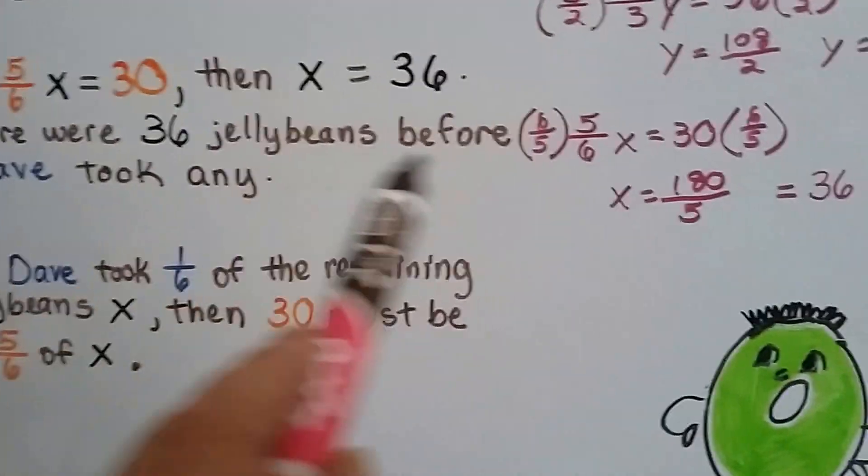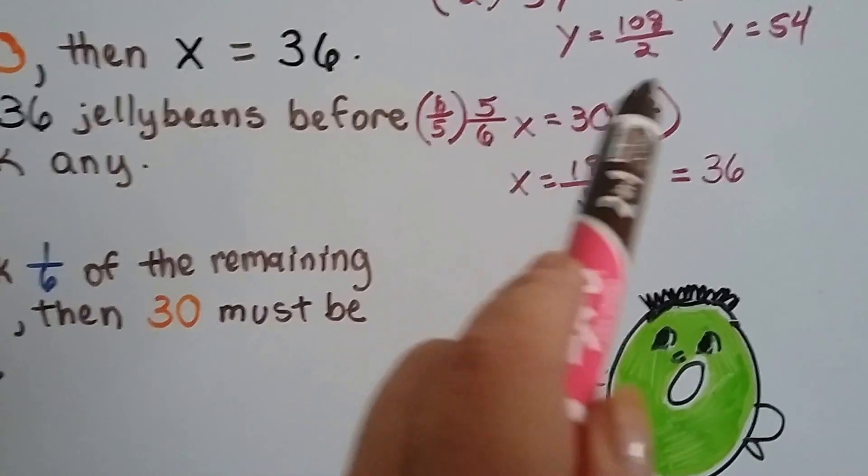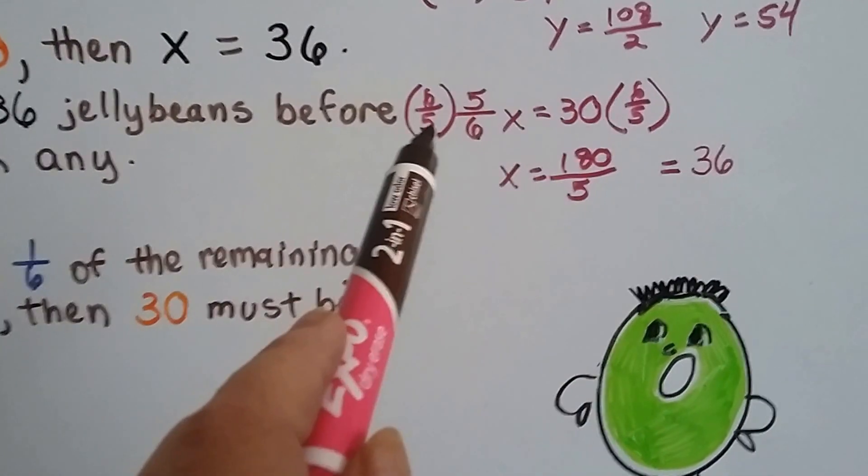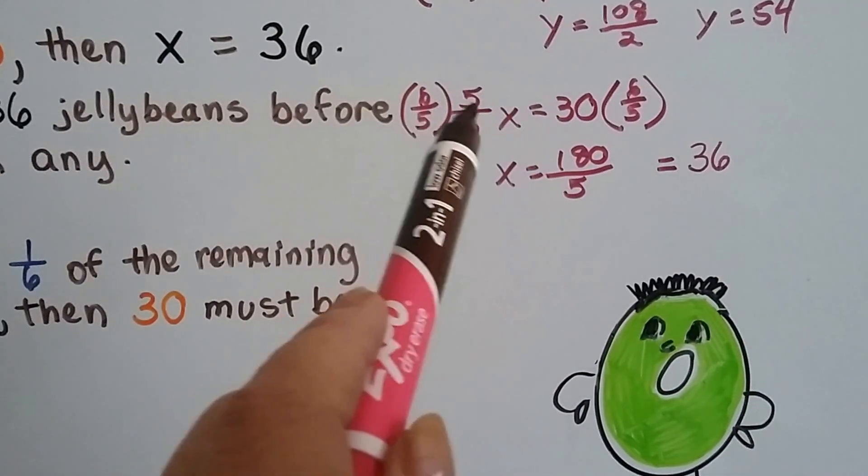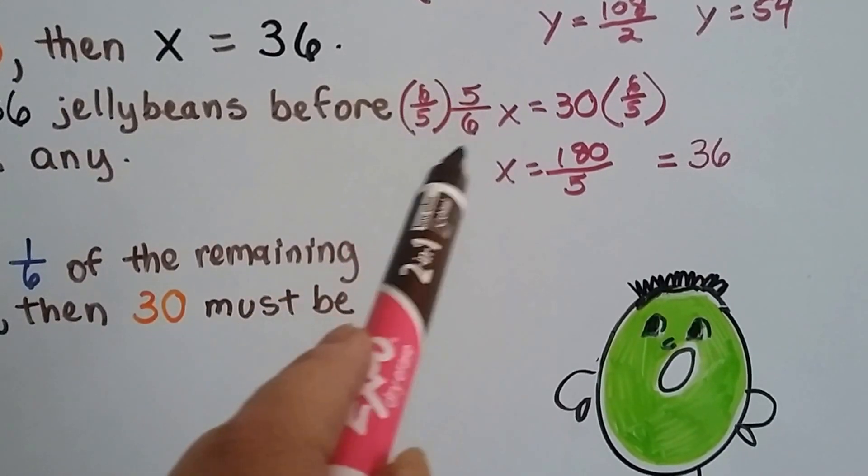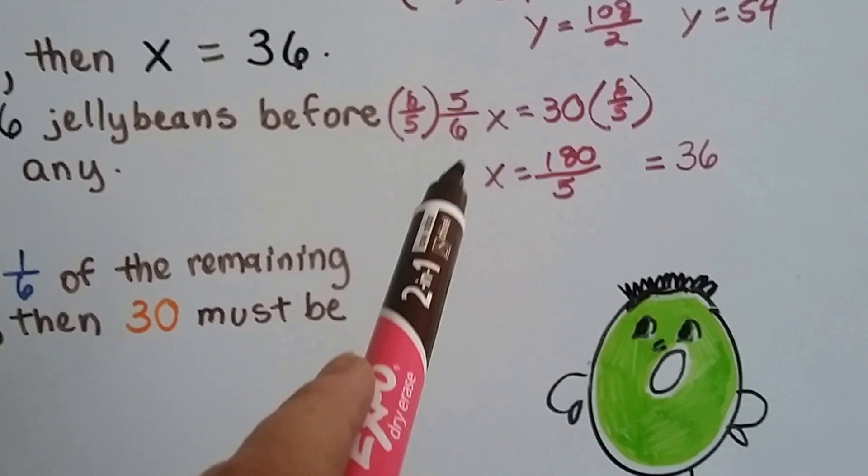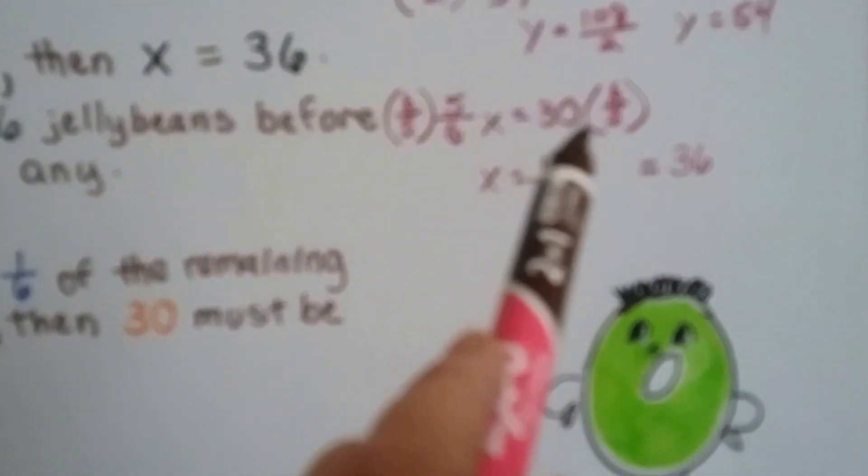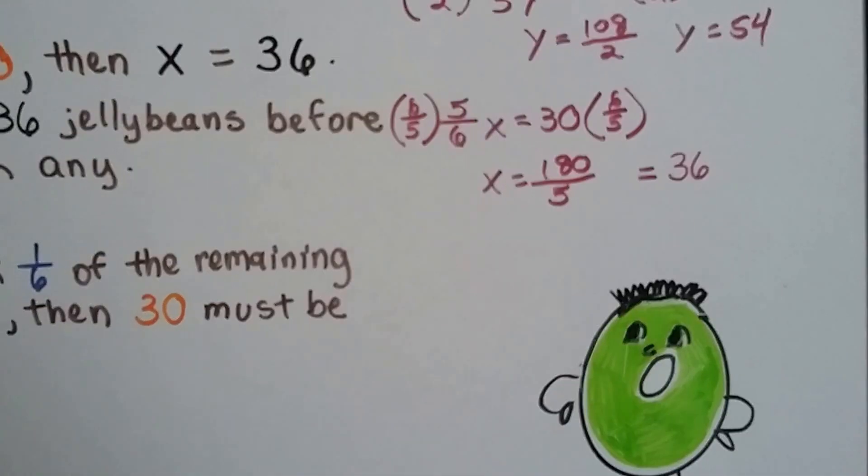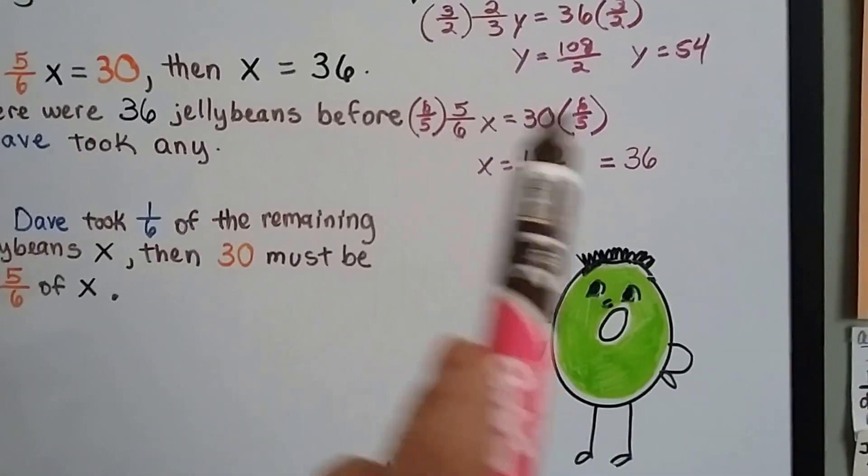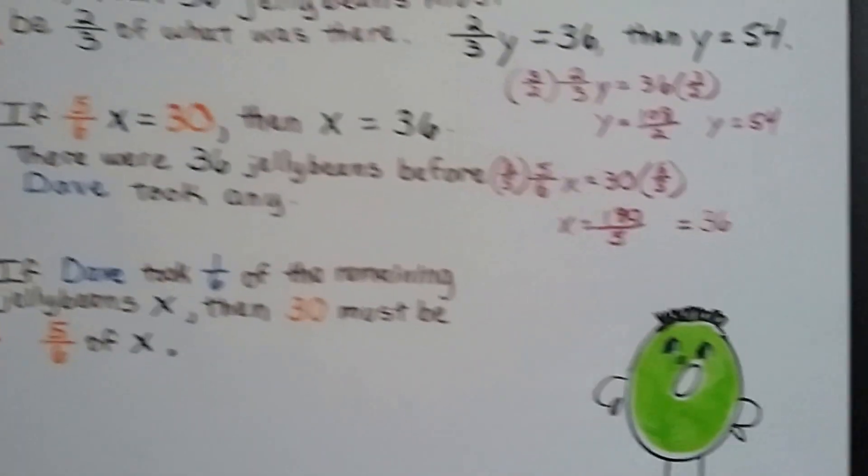We have five-sixths X equals thirty. We multiply both sides by the reciprocal of the fraction, six over five. That's the five-sixths flipped upside down. We get thirty over thirty, which is one. And we get one-eighty over five, which simplifies to thirty-six. We multiplied both sides by the reciprocal. So now we know that there were thirty-six.